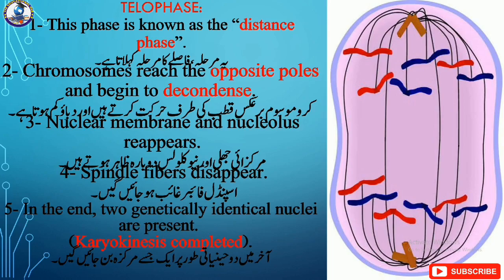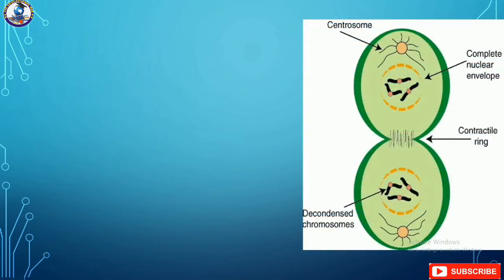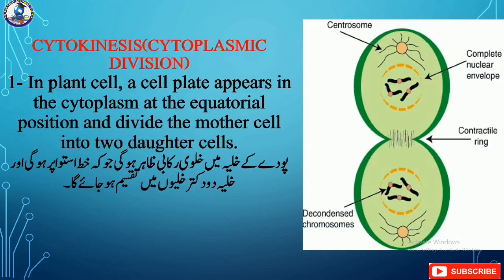And here, karyokinesis — or mitosis — is completed. Now moving towards the second main portion of the mitotic phase, which is cytokinesis.